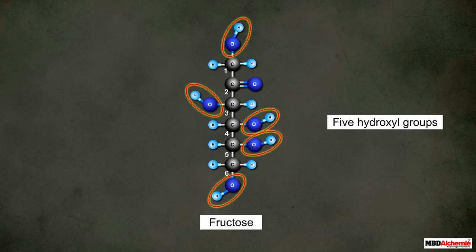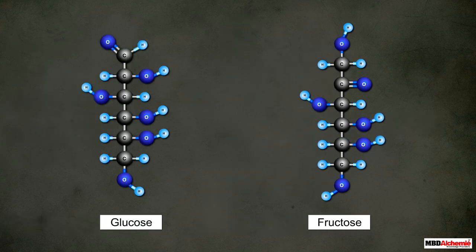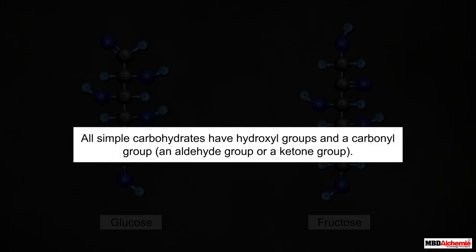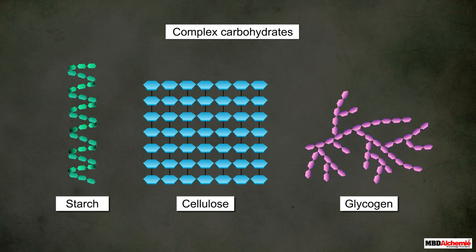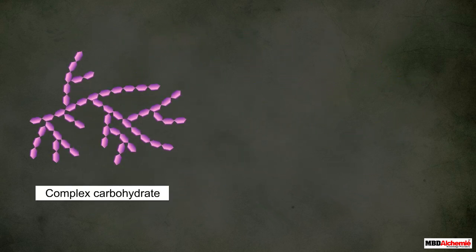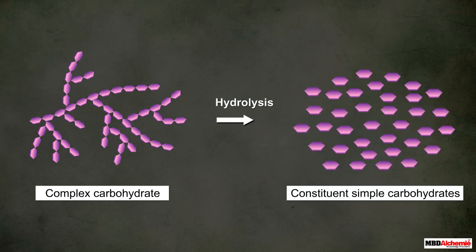Similarly, a fructose molecule also has two functional groups: it has one ketone group attached to the second carbon and five hydroxyl groups attached to the rest of the five carbon atoms. Just like glucose and fructose, all other simple carbohydrates have two types of functional groups in their molecules — the hydroxyl groups and a carbonyl group, that is an aldehyde group or a ketone group. Complex carbohydrates are formed when many simple carbohydrates combine together; when hydrolyzed, they break down and give their constituent simpler carbohydrate units back.